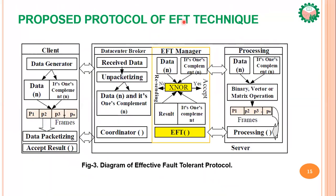The proposed protocol for effective fault tolerance technique has four major components: the client, data center broker, effective fault tolerance manager, and processing element. The client takes the input data, data operands, data types, and its ones complement, which are converted and packetized into a frame. The frame is sent to the server. The data center broker accepts all frames, unpacketizes them, and synchronizes to the data center. The effective fault tolerance manager's error detection mechanism detects any error on the data; if found, the client is requested to resend.